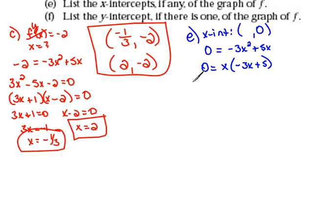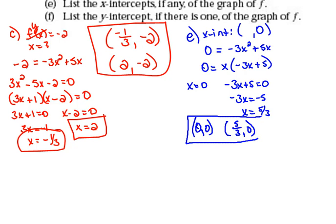And then setting each one of the factors equal to 0, we would have x equals 0 and negative 3x plus 5 equals 0. Finishing solving this, we get negative 3x equals negative 5 or x equals 5 thirds. Now, that tells us we have two different x-intercepts. Our first one is at 0, 0, and our second one is at 5 thirds comma 0.